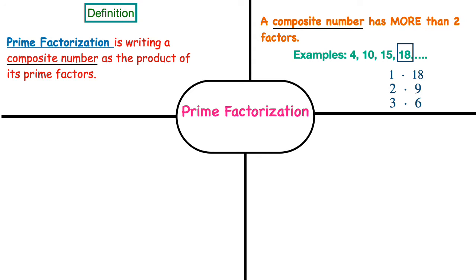Let's look at some examples. If I take the composite number 6 and write it using the prime factors 2 times 3, that gives me the product of 6. So 2 times 3 is the prime factorization of 6, because 2 is a prime factor and so is 3.